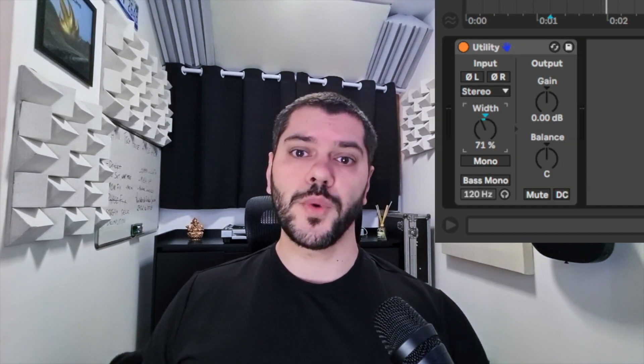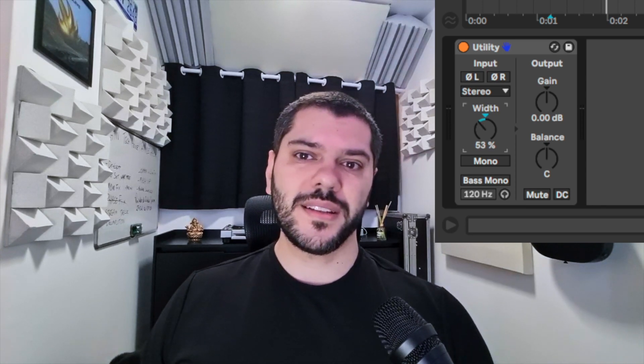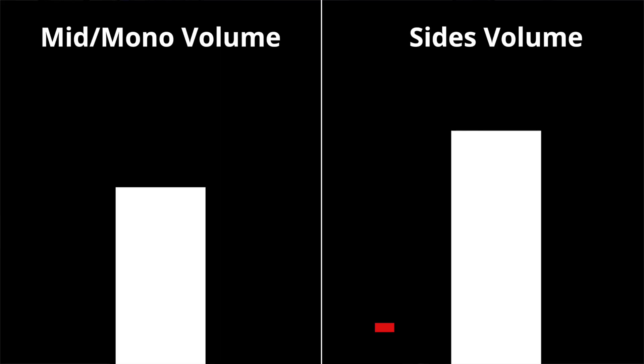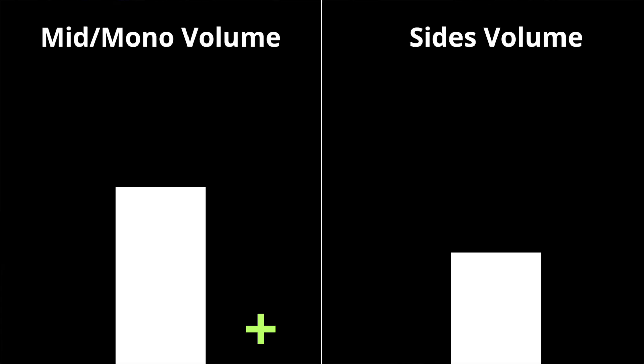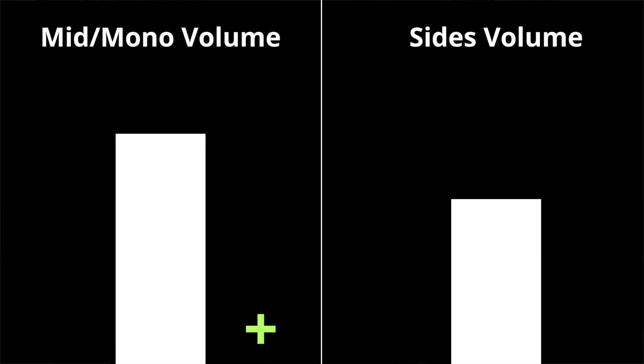A pretty easy way to do this in Ableton is by decreasing the width using the Utility plugin. This way, we are decreasing the volume of the sides only while keeping the volume of the mid. Doing this brings the correlation to positive. Since our correlation is now positive but the overall stereo volume decreases, we will compensate by increasing the overall volume back.